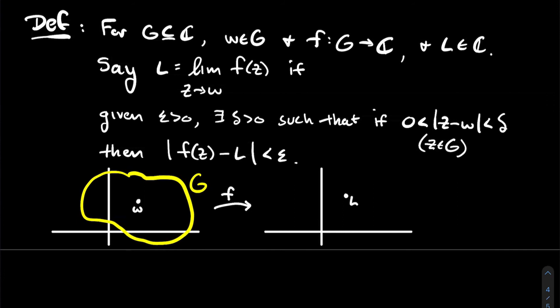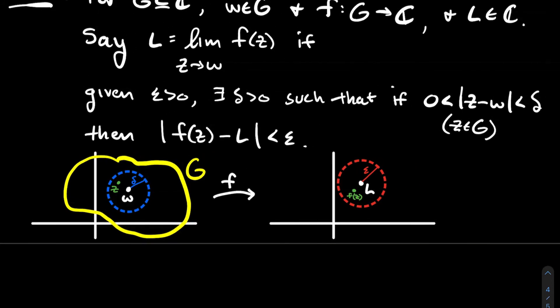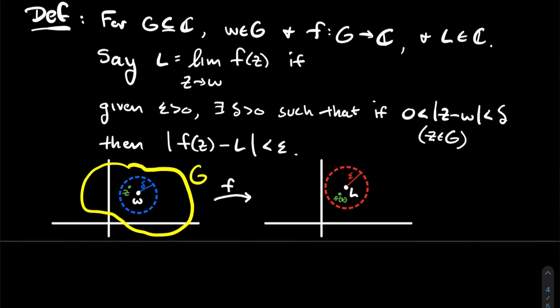Here's the setup visually: you've got your domain G with W some point in there, and then f takes you over into another copy of the complex plane where you've got L — not necessarily in the range of f, just somewhere in the codomain. What does it mean to say the limit of f as you approach W gives you L? Epsilon is arbitrary; I should be able to plop any little disk around L of any radius epsilon I like. And once I've done that, to say this limit exists means I should be able to find some radius delta around W such that any other complex number inside that disk has its output f of z inside the window around L.